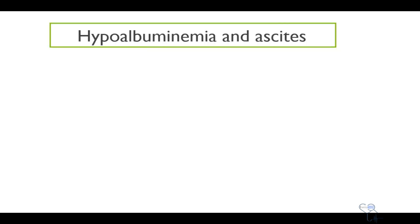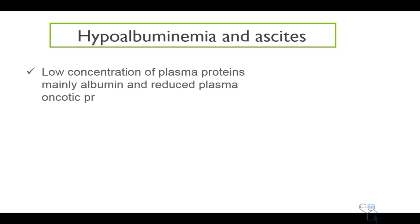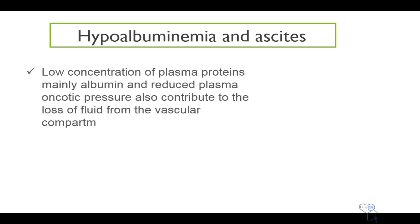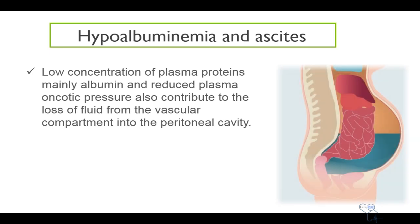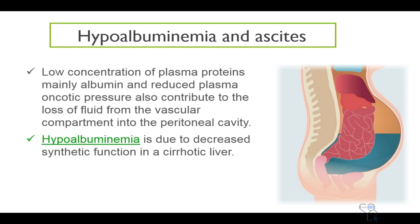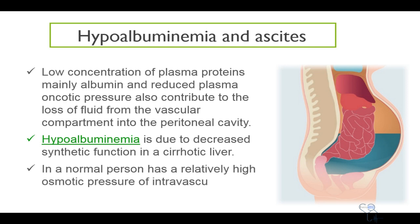Hypoalbuminemia is another cause of ascites. Low concentration of plasma proteins, mainly albumin, and reduced plasma oncotic pressure also contribute to the loss of fluid from the vascular compartment into the peritoneal cavity. Hypoalbuminemia is due to a decreased synthetic function of a cirrhotic liver. In a normal person, there is a relatively high osmotic pressure in the intravascular plasma, which pulls back the leaked fluid into the vascular system.